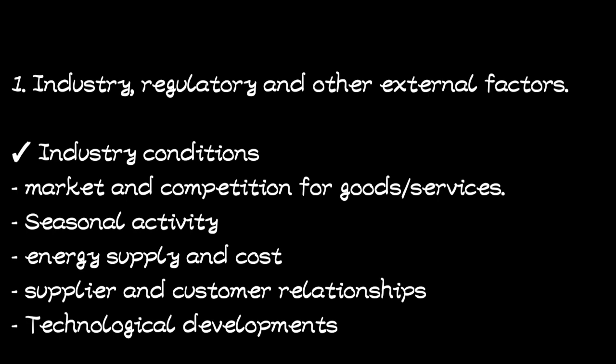Lastly, under industry conditions, we have technological developments. Technological developments make manufacturing plant and products like mobile phones outdated, and this can lead to overstatement of closing inventory. For example, with phones, they keep updating — a brand like Tecno releases a new model every month, so the old stock may be outdated, which will lead to an overstatement of closing inventory. Those are some of the risks under industry conditions.